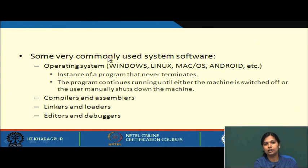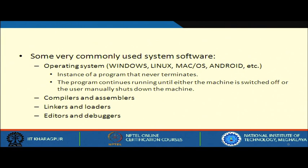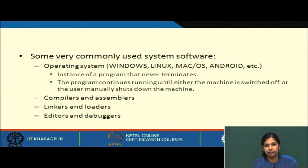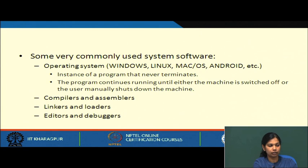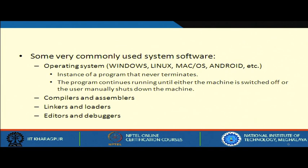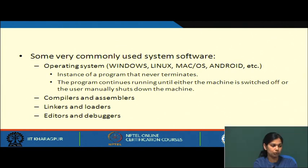Commonly used system software includes Windows, Linux, and Mac — various kinds of operating systems consist of system software. This software continues running until the machine is switched off or shut down. As long as your system is running, those programs will be running. System software includes compilers, assemblers, linkers, loaders, editors, and debuggers.